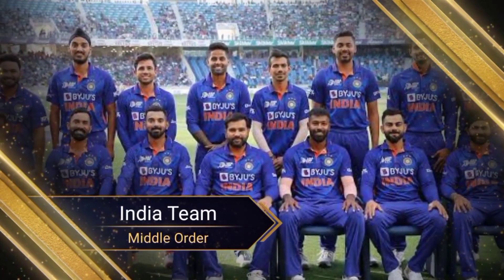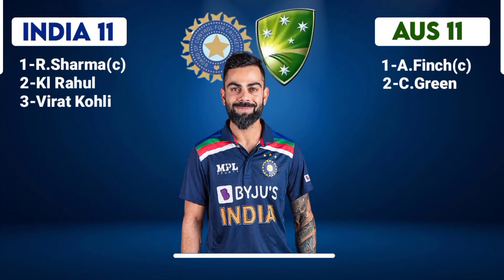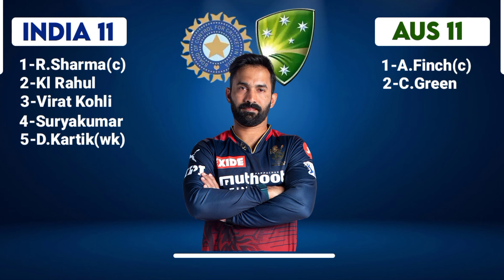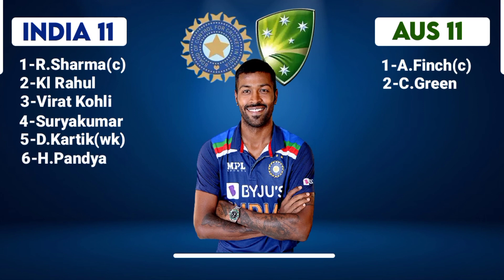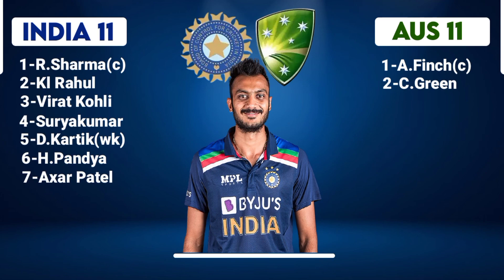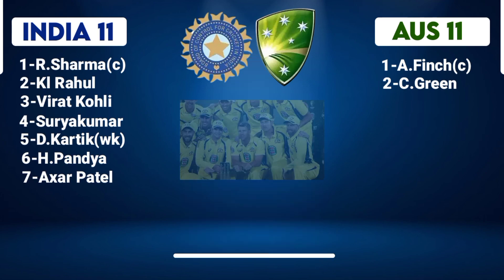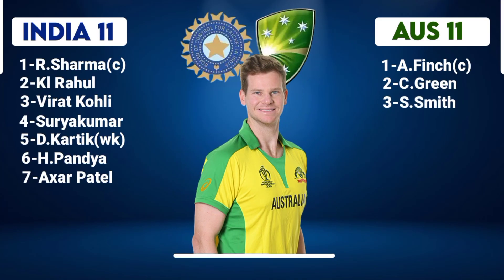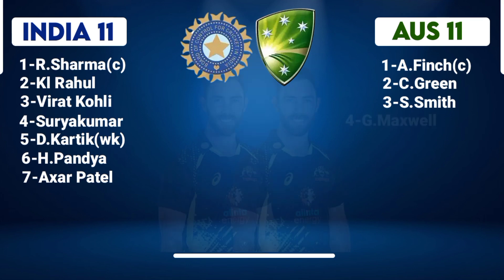Indian Team Middle Order: No.3 Virat Kohli, Right-Hand Batsman. No.4 Suryakumar Yadav, Right-Hand Batsman. No.5 Dinesh Karthik, Wicketkeeper and Right-Hand Batsman. No.6 Hardik Pandya, All-Rounder. No.7 Akshar Patel, All-Rounder. Australia Middle Order: No.3 Steve Smith, Right-Hand Batsman. No.4 Glenn Maxwell, All-Rounder.